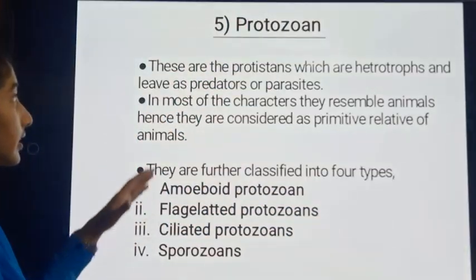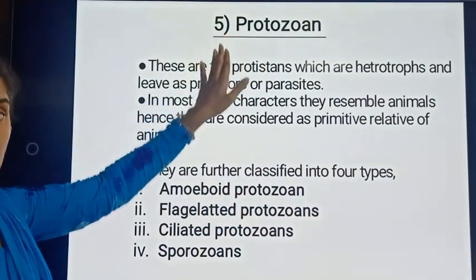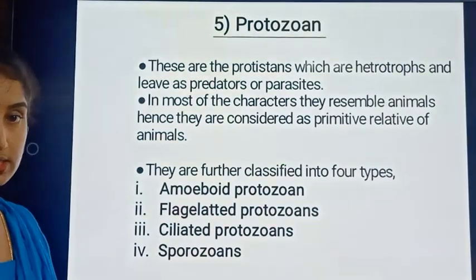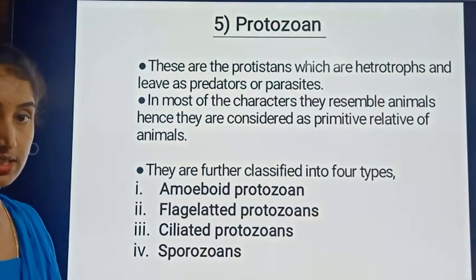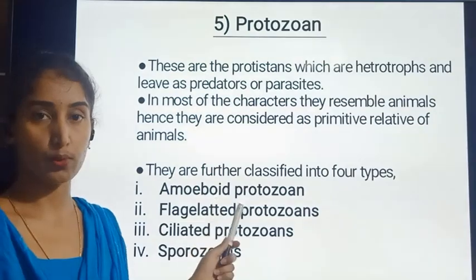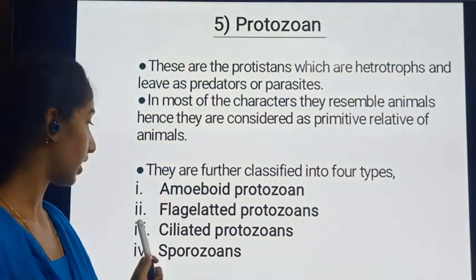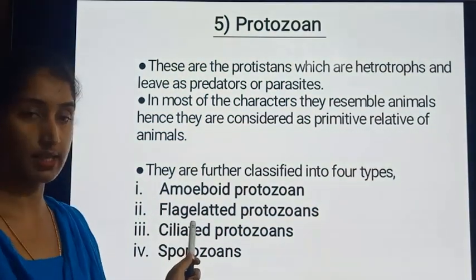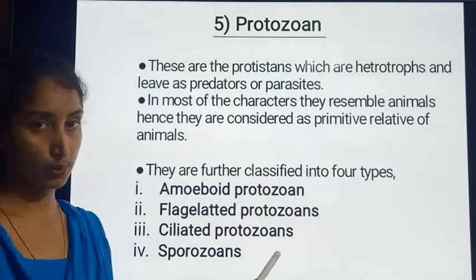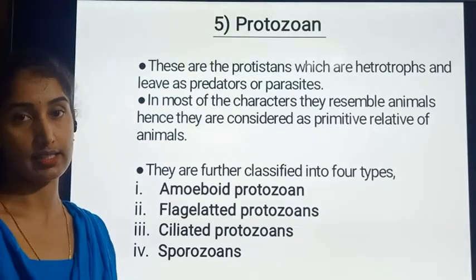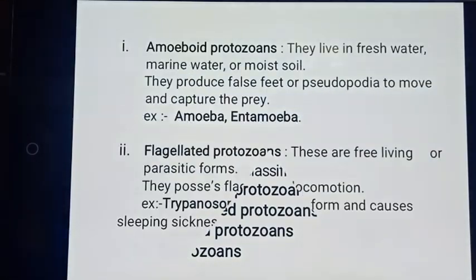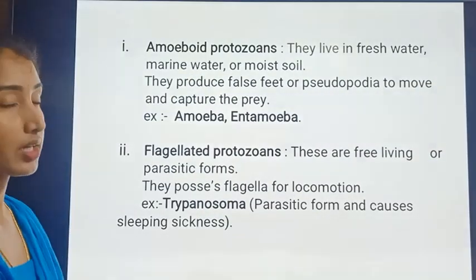These Protozoans are further classified into four different types: the first one is amoeboid protozoan, second is flagellated protozoan, third is ciliated protozoan, and the last one is the sporozoans.